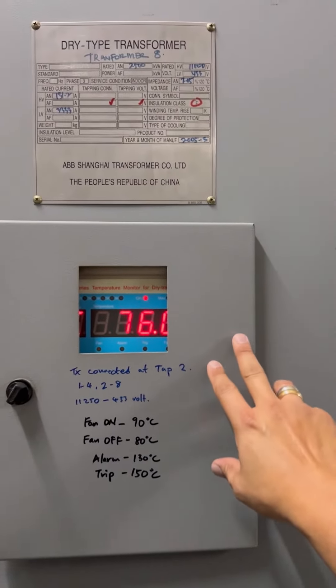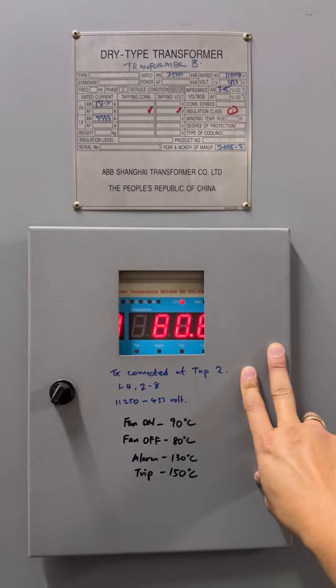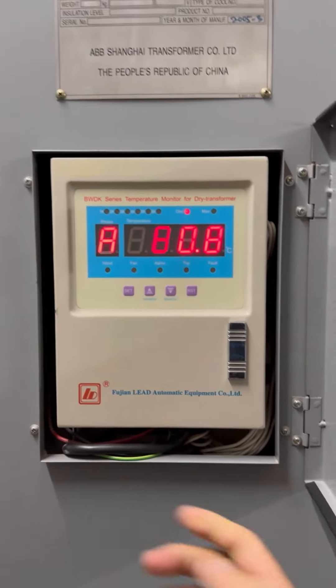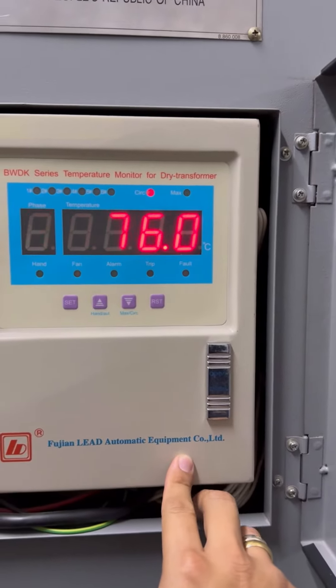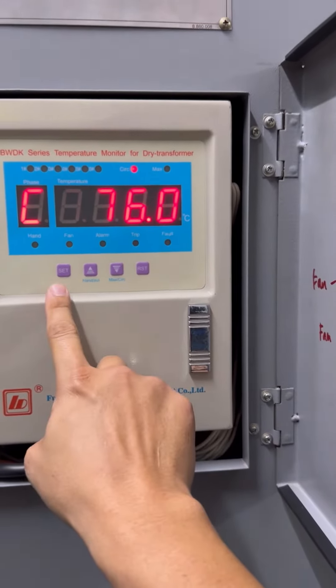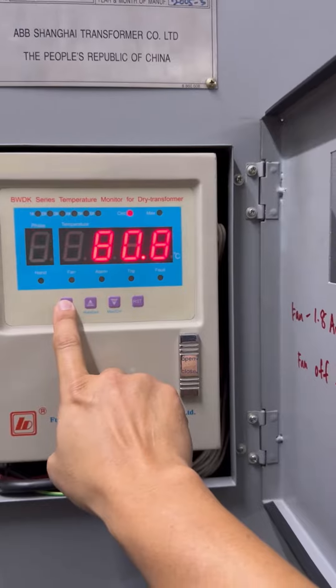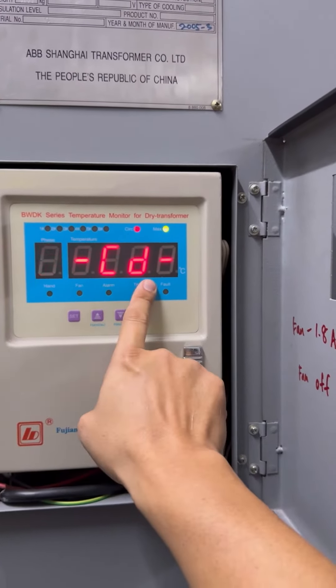This is how you check or adjust the setting for the Fujian LEAD automatic equipment transformer temperature controller. Here you have a few buttons. First, you press the Set button once and you see PCD.